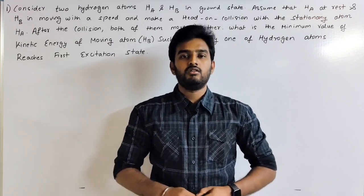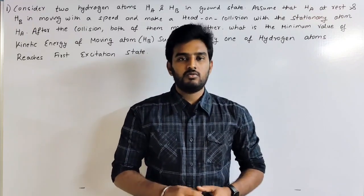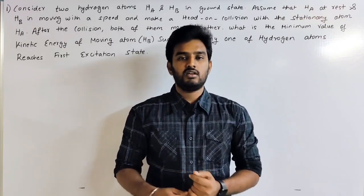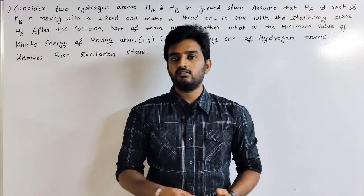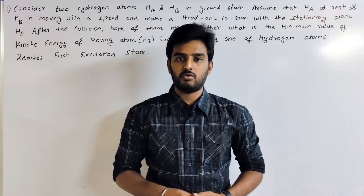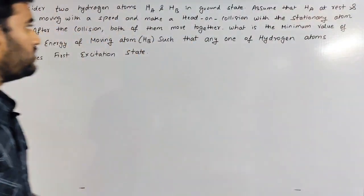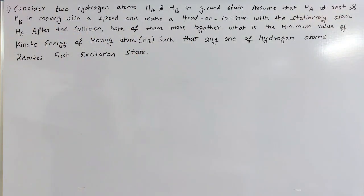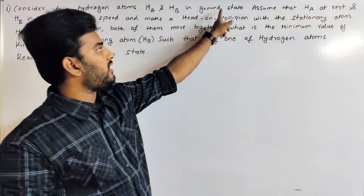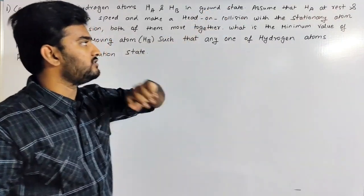Hi everyone. Now we are going to talk about 12th standard physics, 9th chapter, Exist Problem. Problem number 1. Consider 2 hydrogen atoms, hA and hB, in ground state.